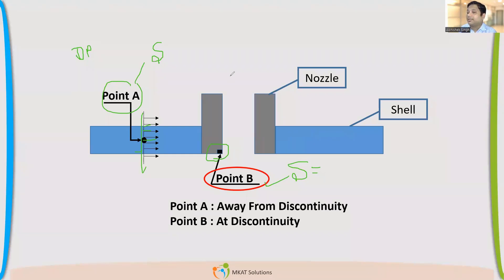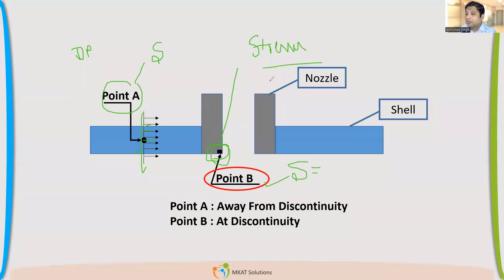There may be multiple points like this where there is a discontinuity. These can also be called stress raisers. Why are they called stress raisers? Because they are here because of the geometry — stresses are more at these points. So these are the stress raisers, and stress is supposed to be more at points which are very close to discontinuity.